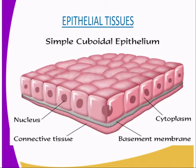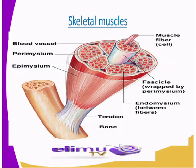The epithelial tissues are of different types: they can be columnar, whereby they are in the form of columns; they can be cuboidal, as in our diagram — cuboidal meaning in the form of a cuboid; and we also have squamous ones. We also have another tissue known as skeletal muscles.